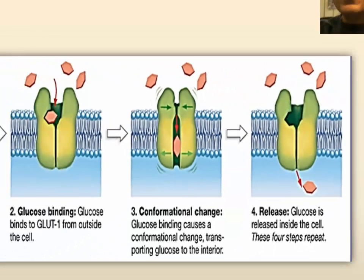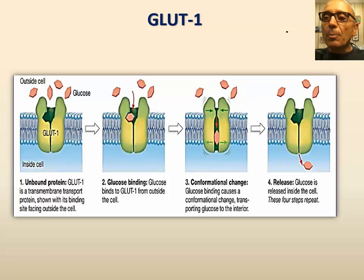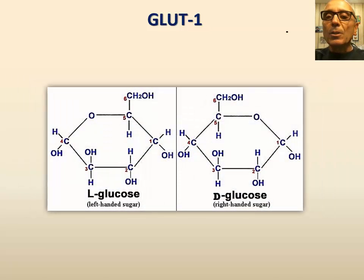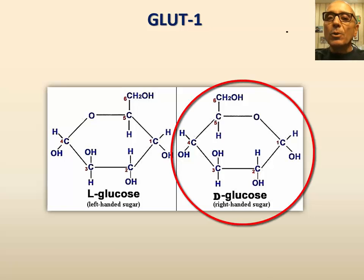This movement is similar to a shuttle bus that operates between a hotel and the airport. It is noteworthy that GLUT1 transports only right-handed glucose, which is the form of glucose that is used by cells.